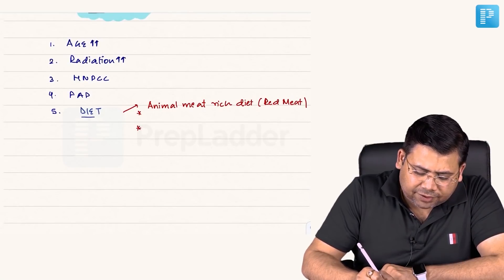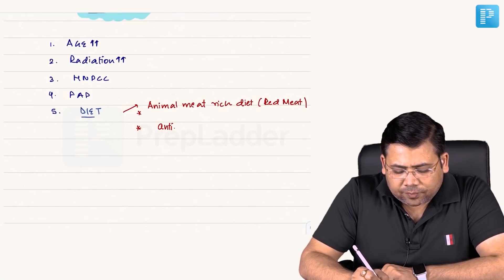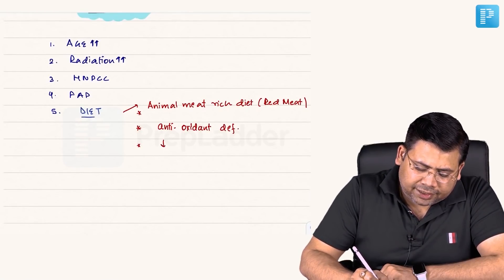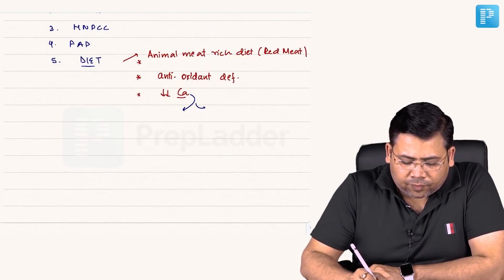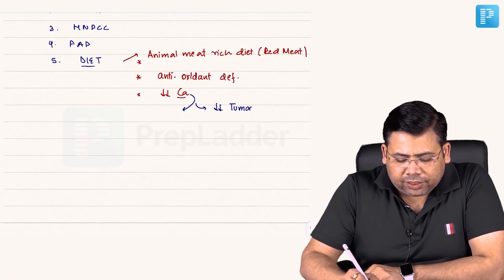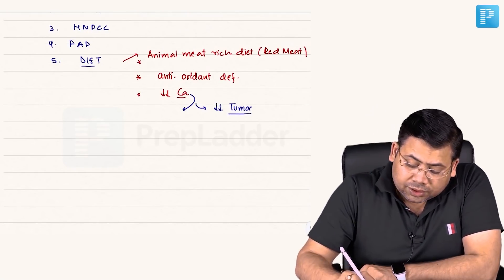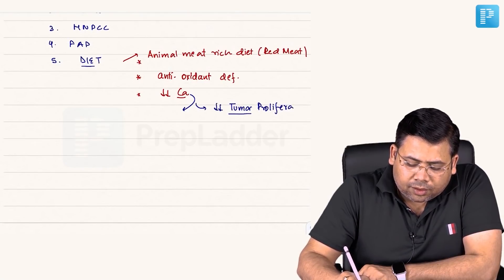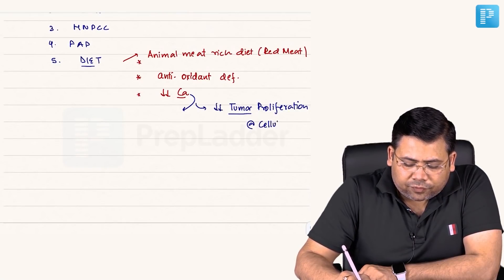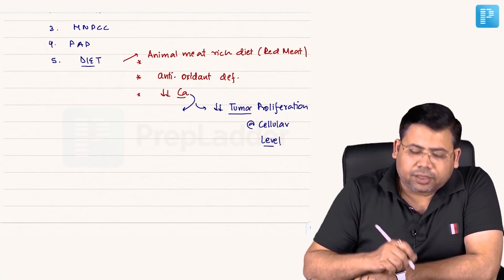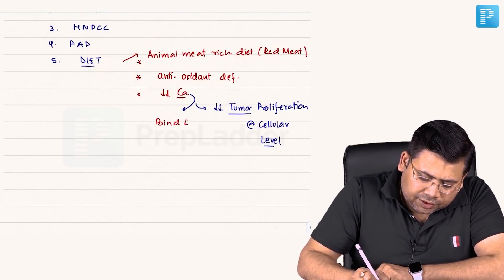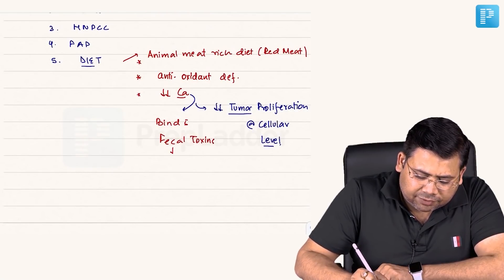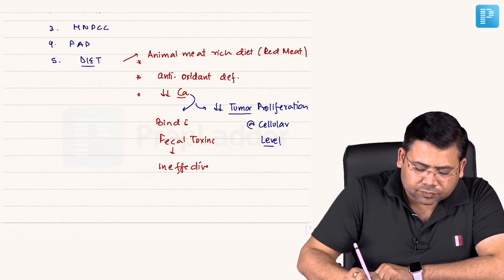Next is any diet which is deficient in antioxidants — antioxidant deficiency. Also, diet deficient in calcium. Calcium has a dual role: first, it decreases tumor proliferation at the cellular level. Second, it binds with fecal toxins and by binding with fecal toxins, it makes them ineffective.